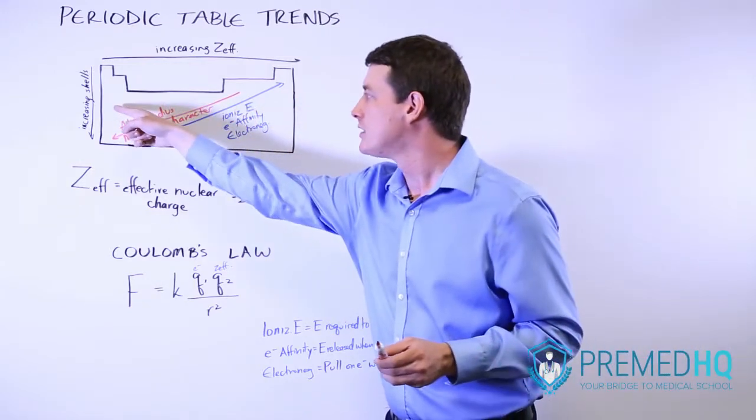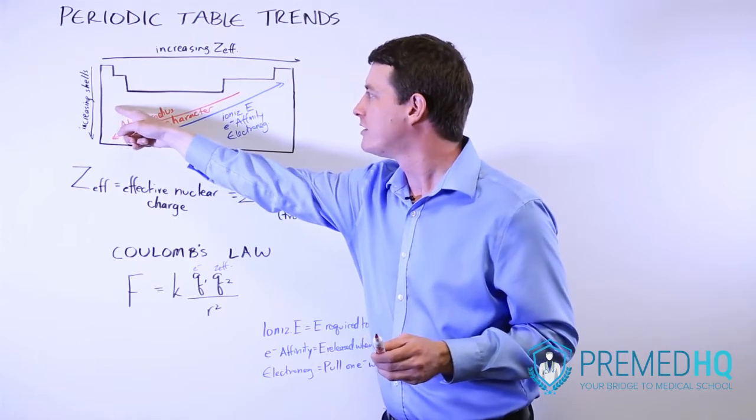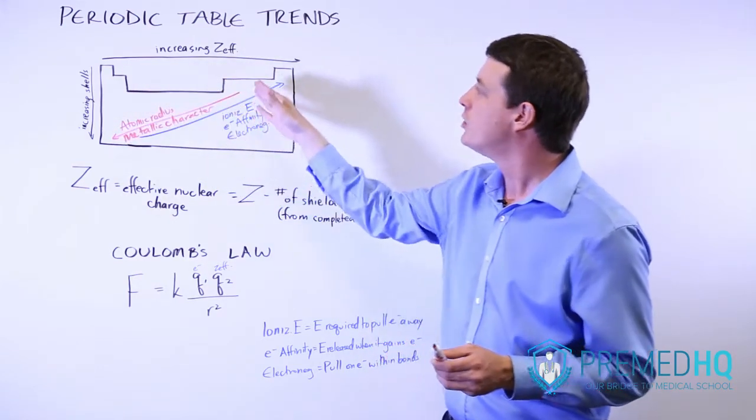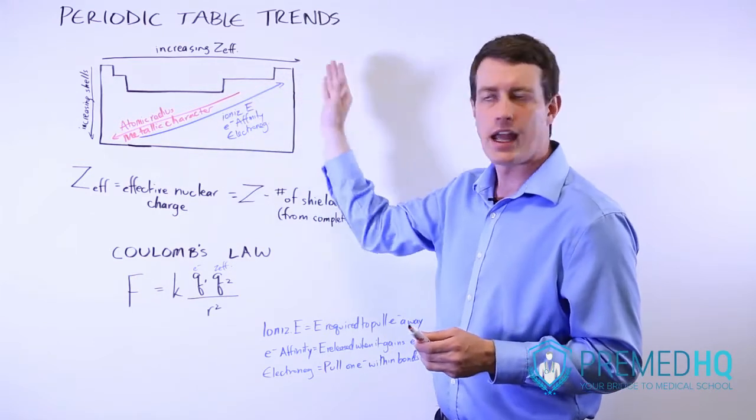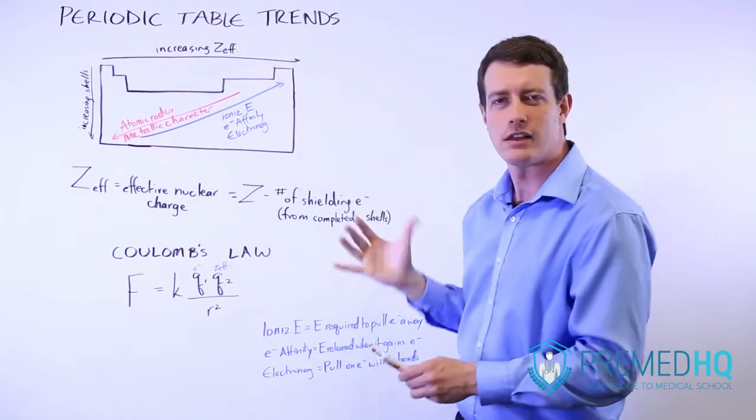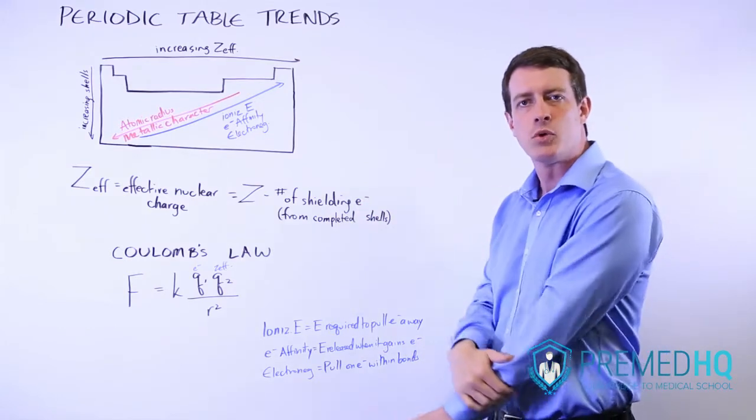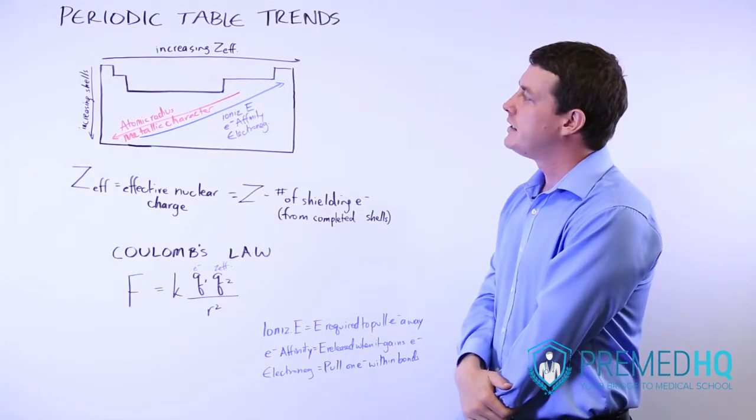And so as you move to the right, you have a Z effective of one, a Z effective of two. Once you get into the p orbitals, it gets a bit more complicated, but you could say this has a Z effective of three, and so on, up until you get to the noble gases where it becomes a bit more complex.